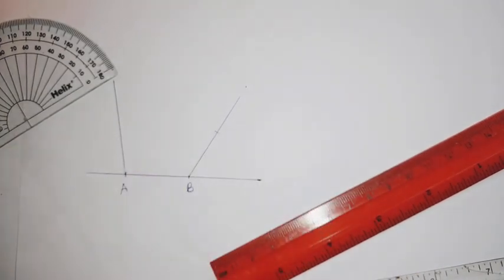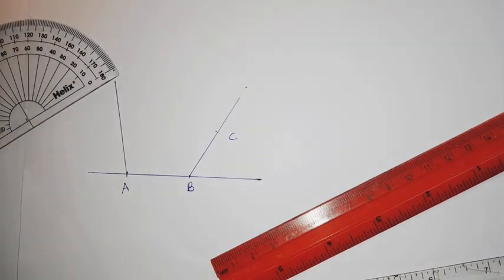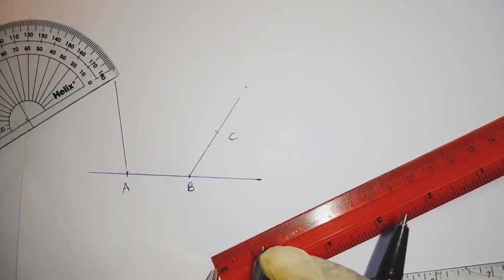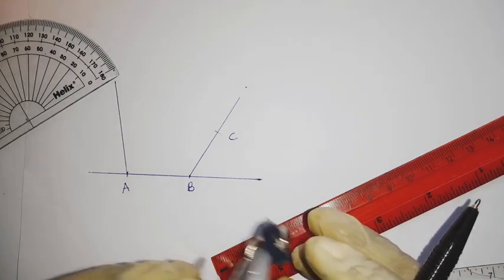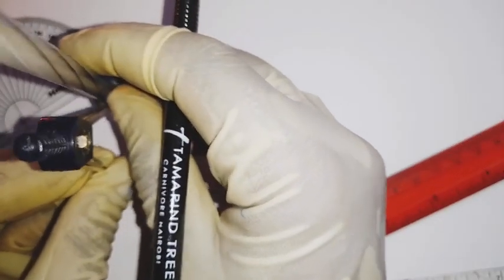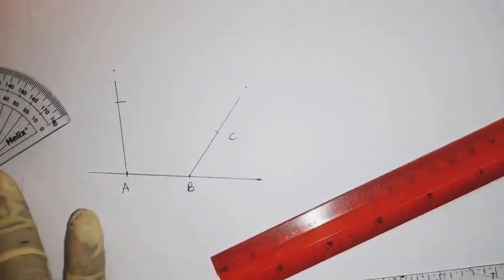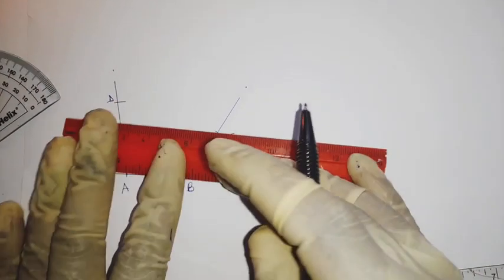This is C. Then we have AD as 35, so we measure 35 and we cut. So this one is our point D.